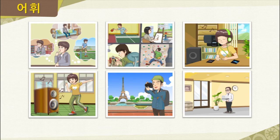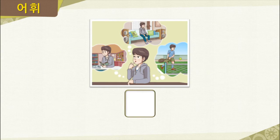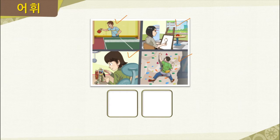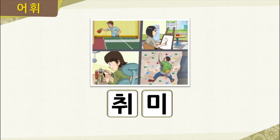Now let's review the words we just learned. What is the shortened form of 무엇을? Right, it is 뭘. In their free time, these people play table tennis, paint, build figures, and climb — all done for fun. So what are these examples of? Right, they are examples of 취미, or hobbies.